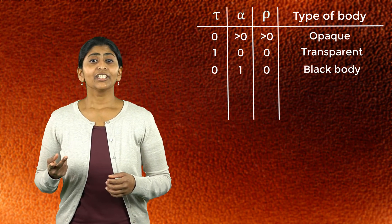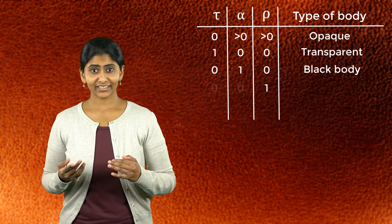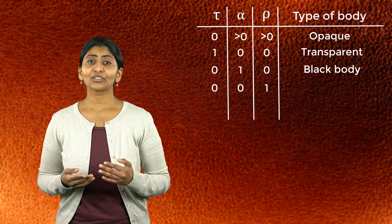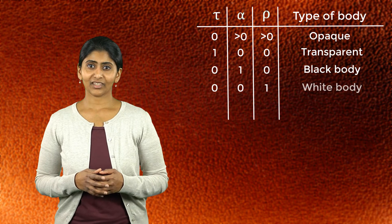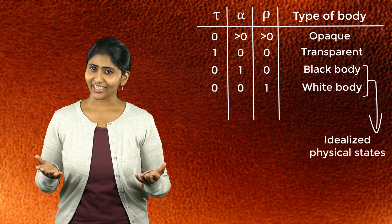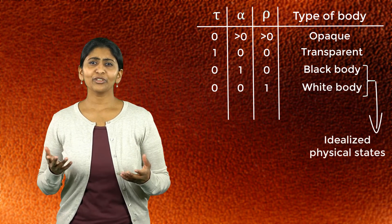Conversely, if a body reflects all the incident radiation in a uniform manner in all directions, it is called a white body. Black body and white body are idealized physical states which are not found in nature.